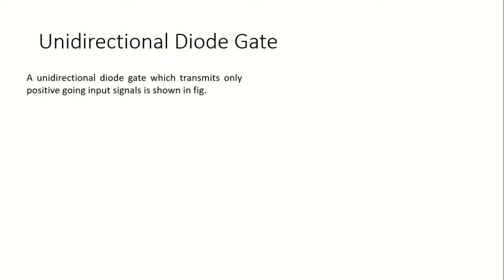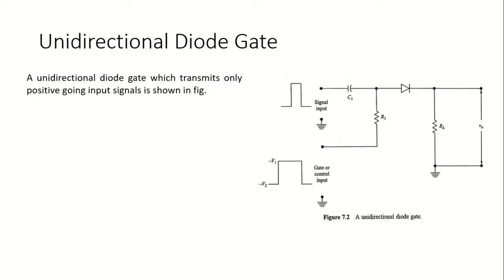An unidirectional diode gate which transmits only positive-going input signals is shown in the figure. For this circuit there are two signals: the input signal to be transmitted to the output, and the control or gating signal applied here. The gating signal has two levels: minus v2 and minus v1. These two input and control signals merge at this point, where superposition applies.